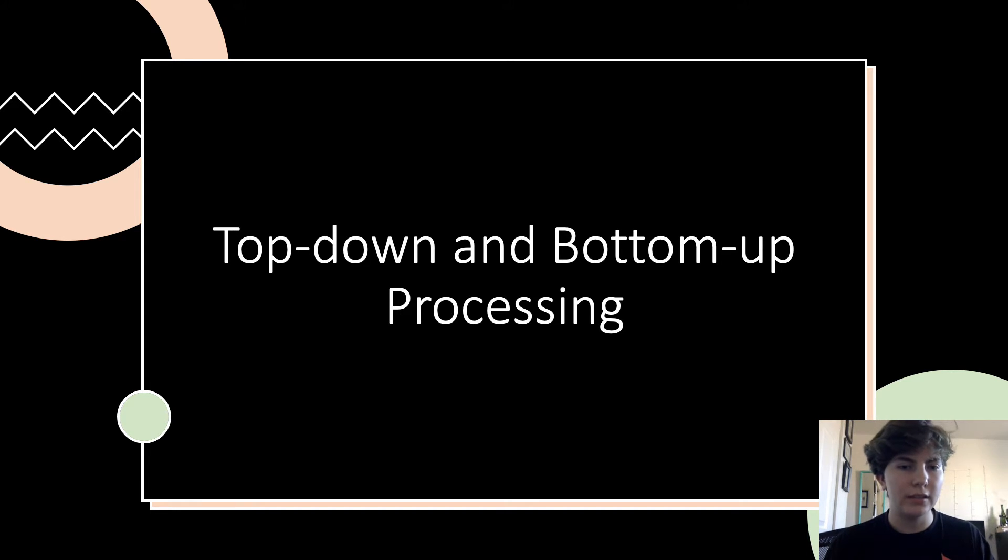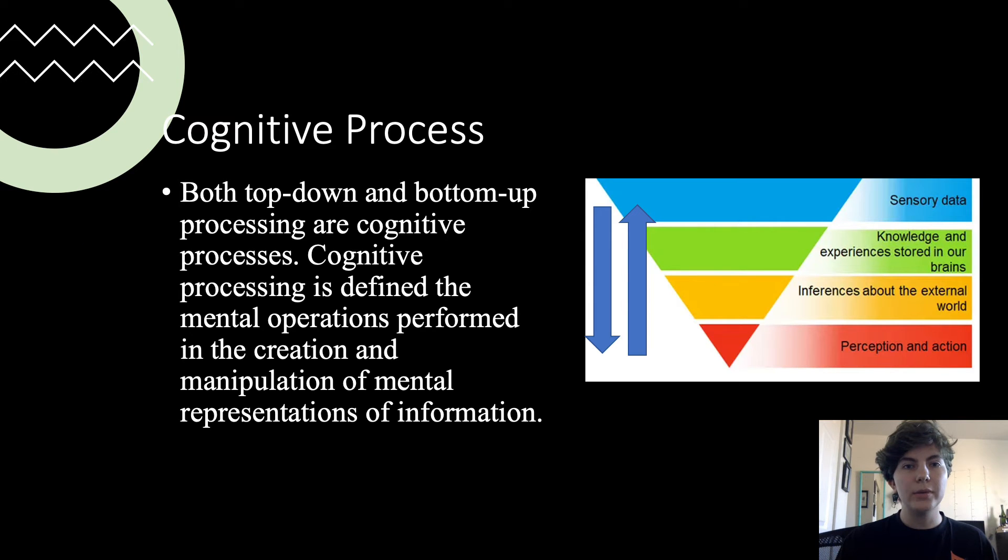So moving on, I wanted to start with what top-down and bottom-up processing have in common, and they are both cognitive processes. A cognitive process is defined as the mental operations performed in the creation and manipulation of mental representations of information. So they're both going to involve sensory information, inferences from the external world, knowledge and experiences stored in our brains, and the perception action that we take. They're just going to be organized differently.